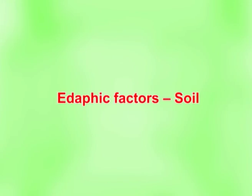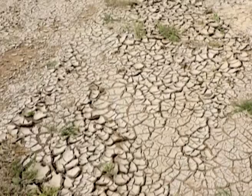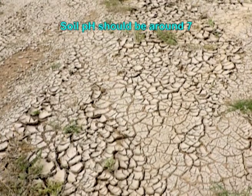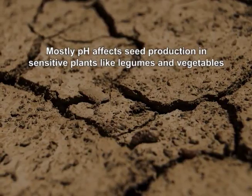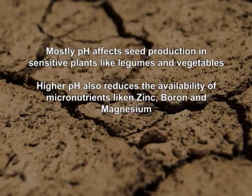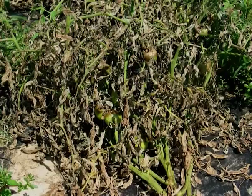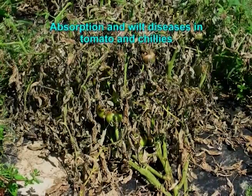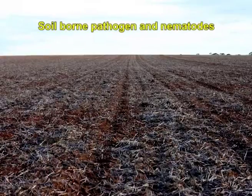The next factor is edaphic factors — that is soil factors. To be a successful farmer, one must first know the nature of the soil. For seed production, fertile soils are generally preferred. Soil pH should be around 7 but should not be alkaline in nature. pH affects seed production in sensitive plants like legumes and vegetables. Higher pH also reduces the availability of micronutrients like zinc, boron and magnesium. Problem soils like saline soils and acidic soils are to be avoided for seed production. Ill-drained soil also causes chlorosis in corn and wilt disease in tomato and chillies. The soil should be free from soil-borne pathogens and nematodes, especially for seed production in horticultural crops.